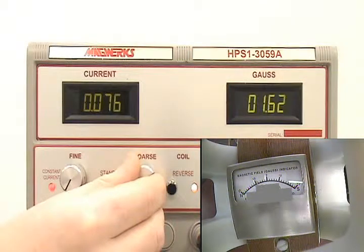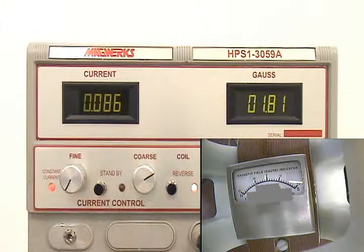At 1.81 Gauss in the coil, the magnetometer reads 10 Gauss.